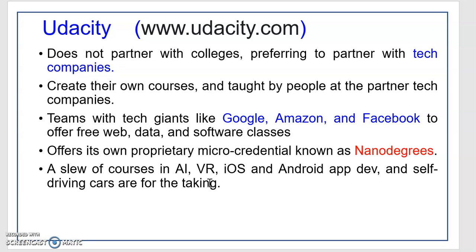Udacity is another website offering courses not from colleges but from technical companies like Google, Amazon, and Facebook. They also offer nanodegrees. Courses include artificial intelligence, virtual reality, iOS and Android app development, and other latest software development and programming topics.